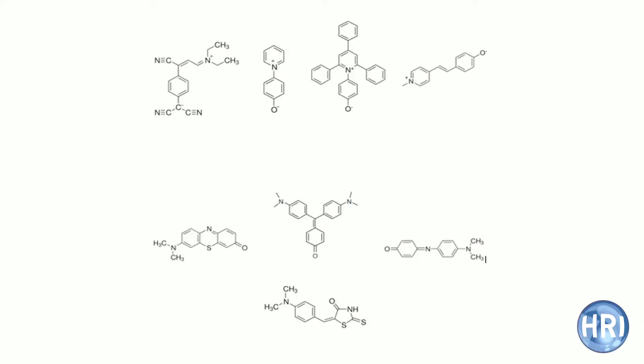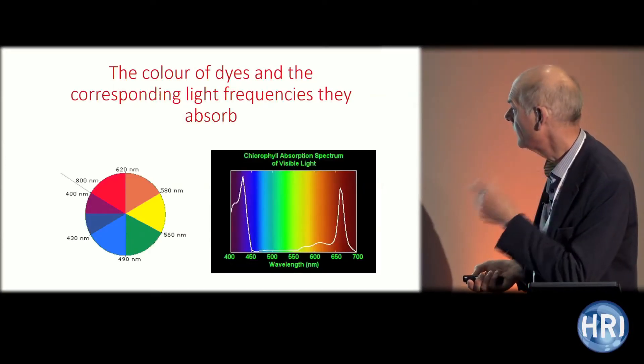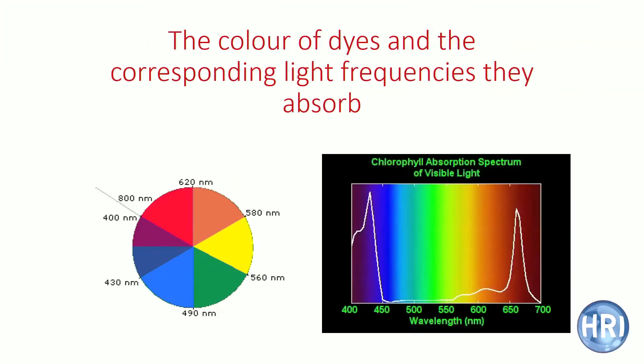Some of these dyes will be familiar from solvatochromic work. One is particularly interesting because it has a carbanion donor — quite unusual — and a quaternary nitrogen acceptor. These are positively solvatochromic. One interesting dye opens up at certain pH values, allowing it to be immobilized on membranes, which I'll come to if there's time. All eight dyes have been examined, and bearing in mind the colour wheel — the colour of a dye is opposite to the light frequency it absorbs — the results follow.